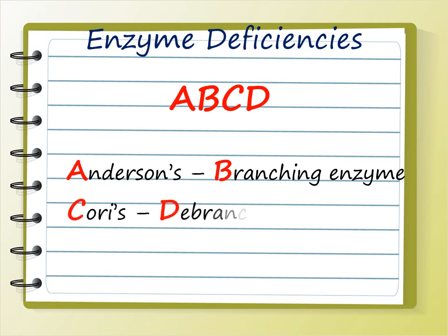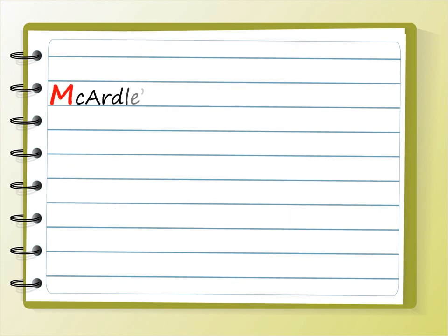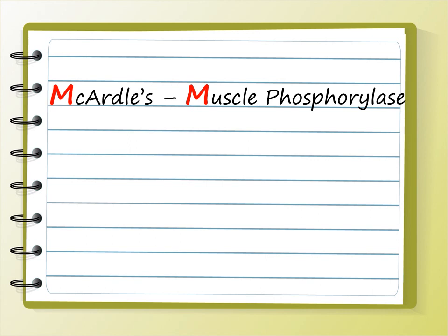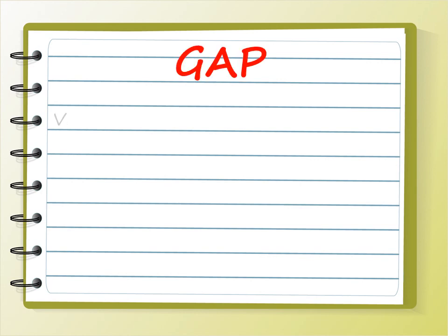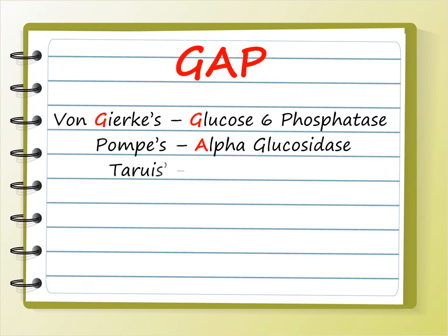Now for the enzyme deficiencies, remember the simple mnemonic ABCD: Anderson is branching enzyme and Cori is debranching enzyme. Next, McArdle — letter M — and muscle phosphorylase — also letter M, so M for M. Similarly, Hers is hepatic phosphorylase — H for H.